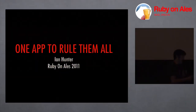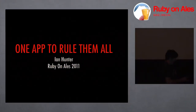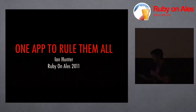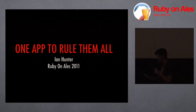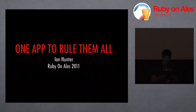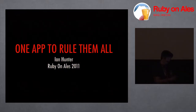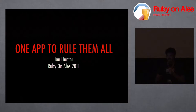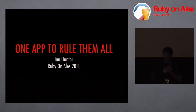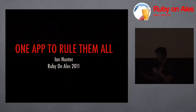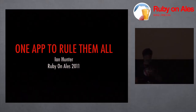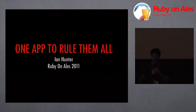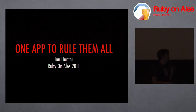Our first speaker today is Ian Hunter. By night, Ian Hunter is working as henchman number 16 for famed supervillain the Monarch. By day, rather than taking over the world for somebody else, Ian uses Ruby to take over the world for himself. And today he's going to be talking to us about one Ruby app to rule them all.